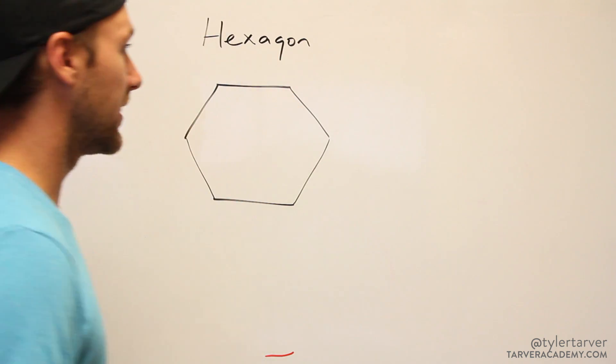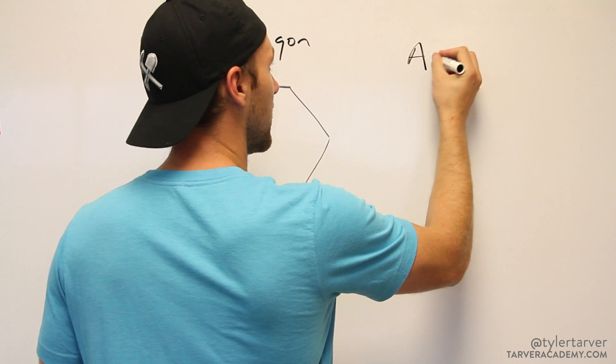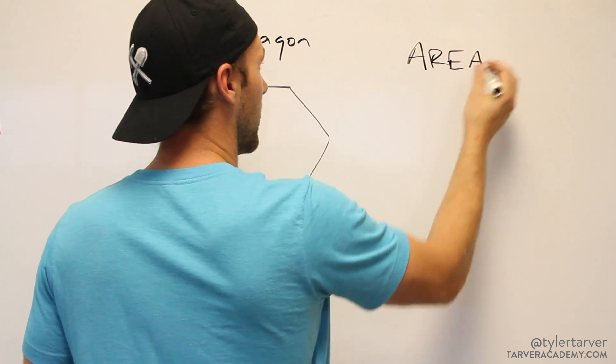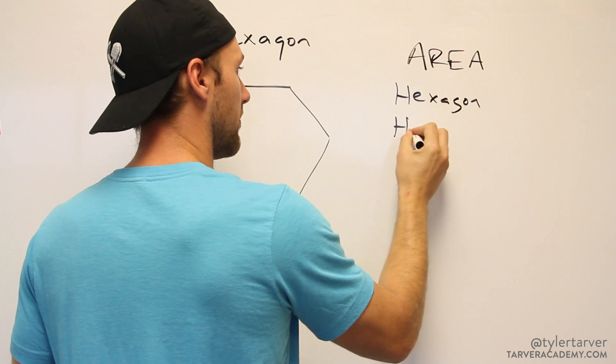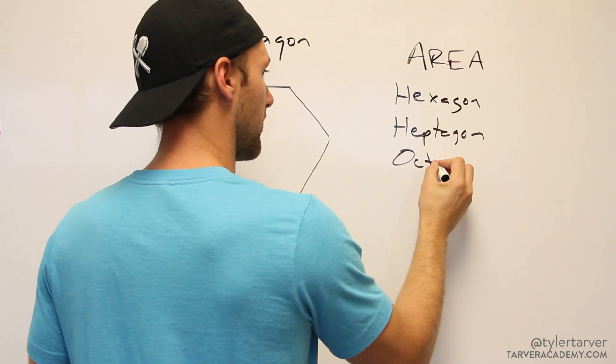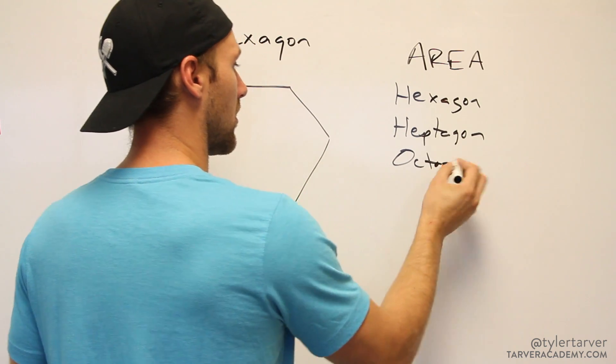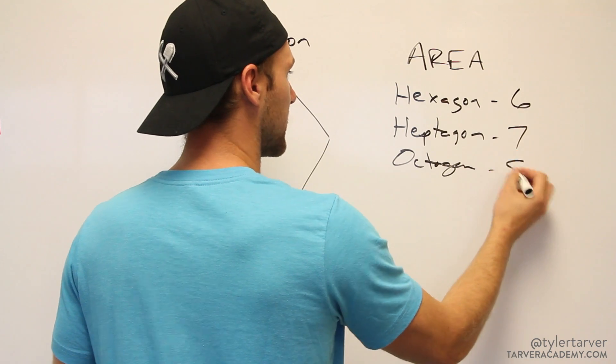Okay, so what we're looking at right now is how to find the area of a hexagon, heptagon, and an octagon. Hexagon is six-sided, heptagon is seven, octagon is eight.